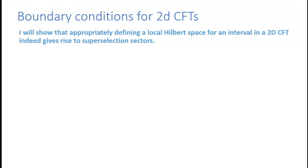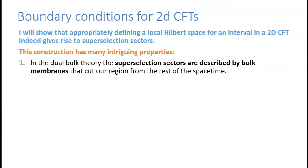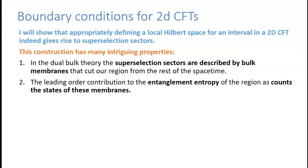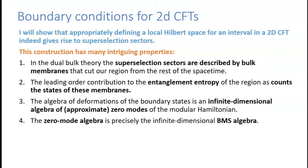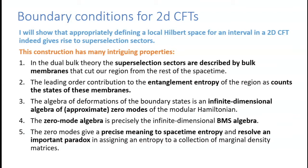I will show that by appropriately defining the local Hilbert space for an interval in a 2D CFT, we indeed get superselection sectors. The construction has intriguing properties: in the dual bulk theory, superselection sectors are described by bulk membranes that cut the region from the rest of spacetime; the leading-order entanglement entropy counts these membrane states; the algebra of deformations of these boundary states is an infinite-dimensional algebra of approximate zero modes of the modular Hamiltonian, which is precisely the BMS3 algebra of a Rindler horizon; and these zero modes give a precise meaning to space-time entropy, resolving an important paradox about assigning entropy to marginal density matrices.